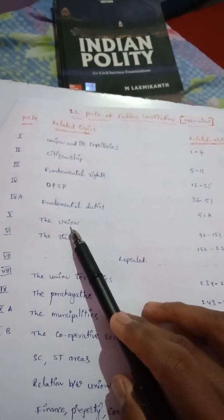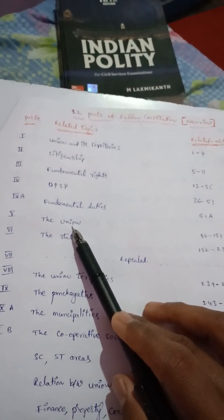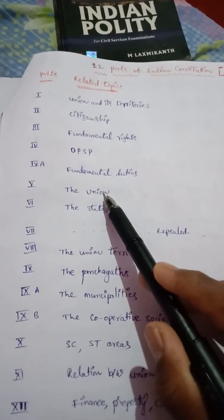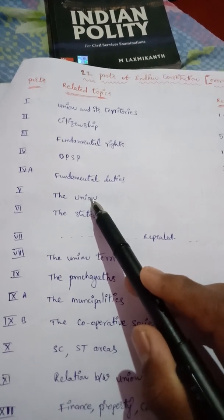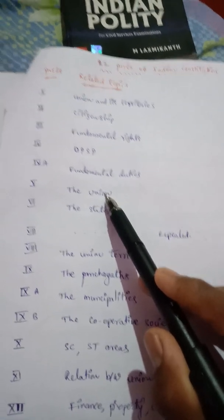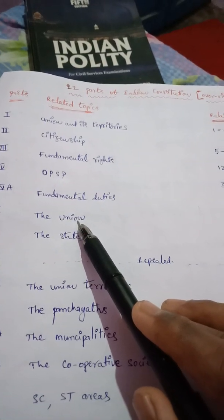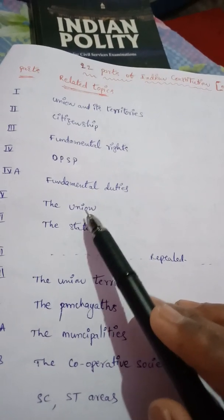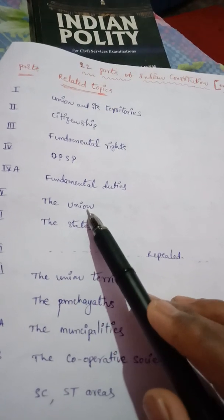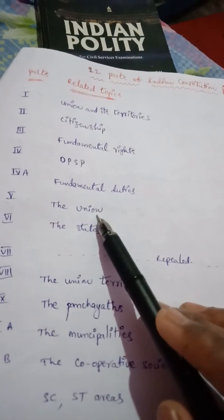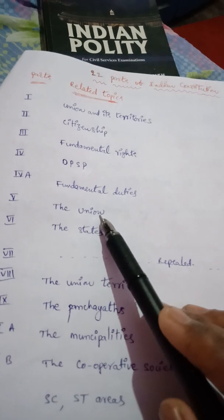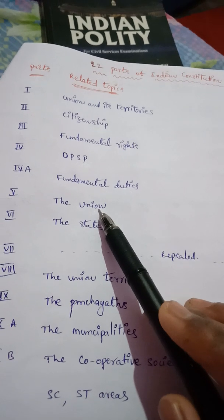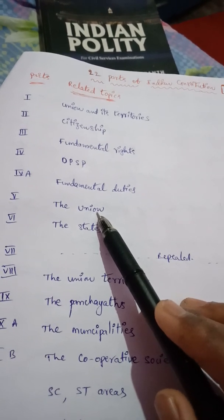Next, review of judgments by the Supreme Court — the Supreme Court has the power to review any judgment made by it. That means the Supreme Court can correct its own judgment, even one already given by itself.